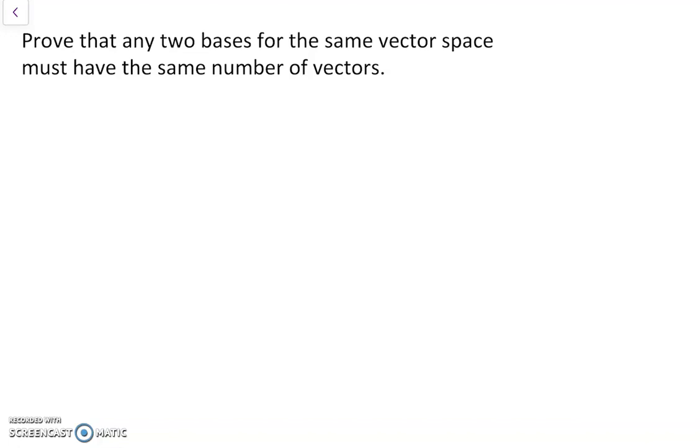Today, I'll be proving that any two bases for the same vector space must have the same number of vectors. Okay, so we have to consider two bases for the same vector space, so we can call the vector space V.